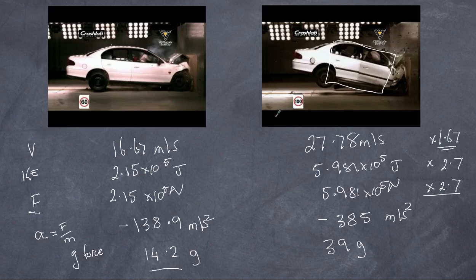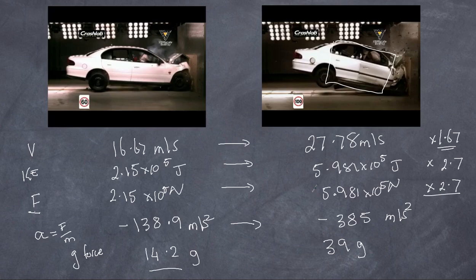Needless to say, travelling at 100 km/h and crashing has a much lower chance of survival than at 60 km/h. Everything that happens in a car crash is governed by physics: Newton's three laws, kinetic energy, work, impulse, and change in momentum. Hopefully for those studying physics, this gives you a better handle on Newton's laws and the laws of mechanics. Thanks for watching.